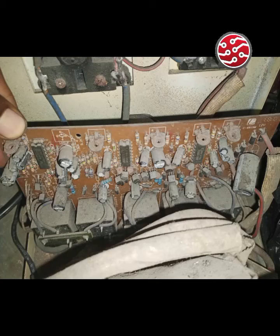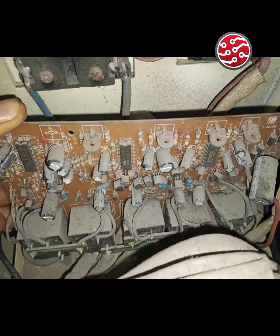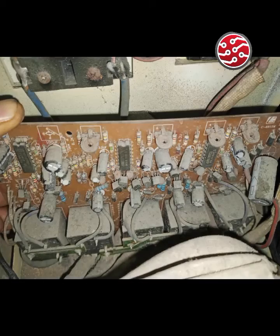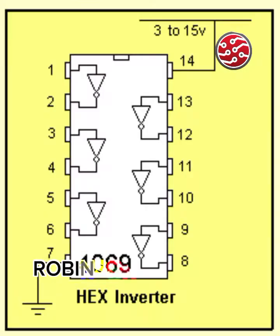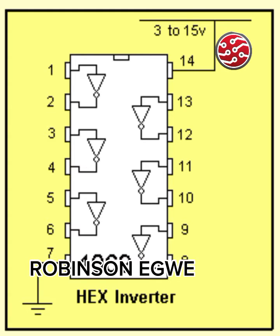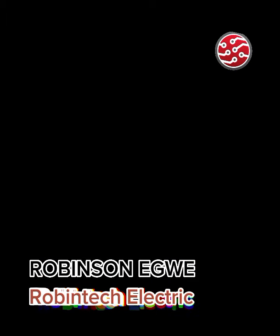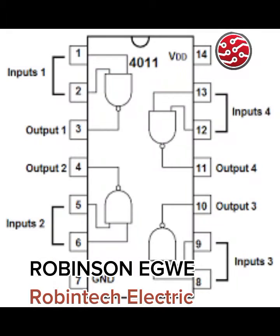Hello and welcome. Today I will be talking about the IC 4069 — you can call it CD, TC, or F 4069. It is one of those ICs used in a voltage stabilizer, and it is being used along with another IC, the 4011.